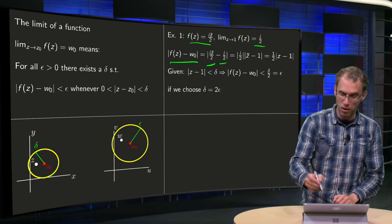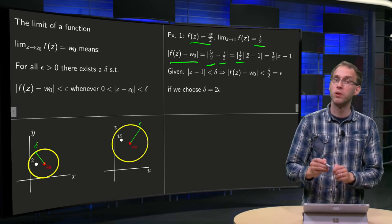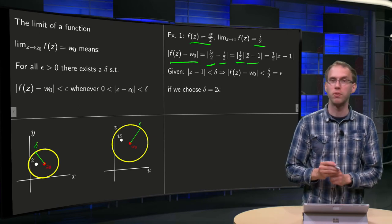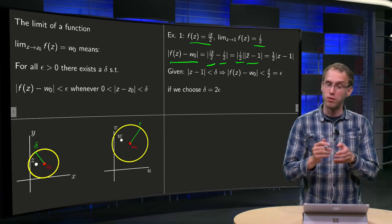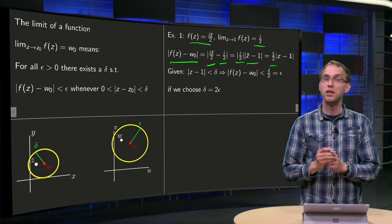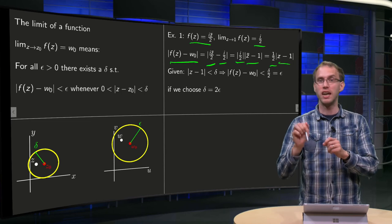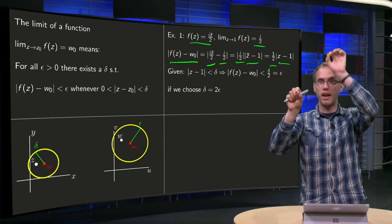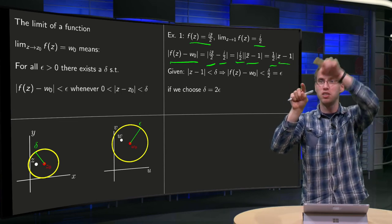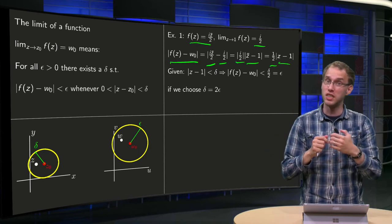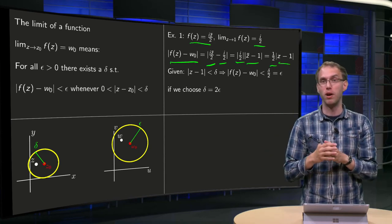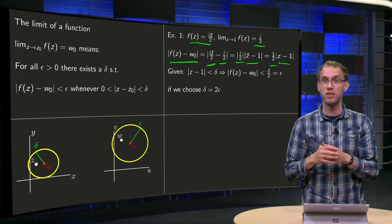Well, you can take the i/2 out, and then you get the modulus of i/2 times the modulus of z̄ - 1. Now the modulus of i/2 is just 1/2, and the modulus of z̄ - 1 equals the modulus of z - 1. Why is that? If you have the 1, and either the z or the z̄, the distance to the 1 is the same.